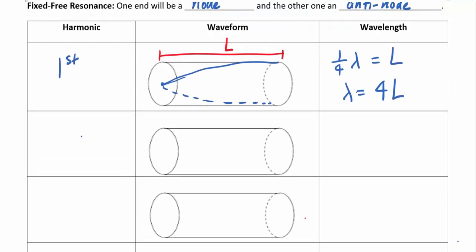Interestingly, there is no second harmonic in a fixed-free tube. If you double the frequency and try to fit half a wave in, you end up with a node at both ends, which violates the fixed-free condition. So we skip straight to the third harmonic.